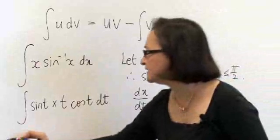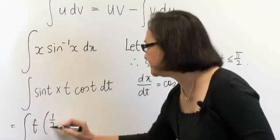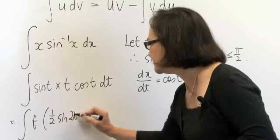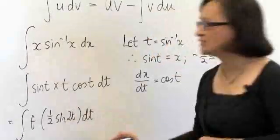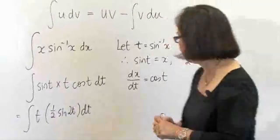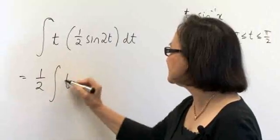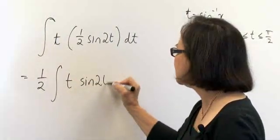Then this becomes t half sine 2t dt, and it's much easier to integrate this product now. And this is now going to equal a half t sine 2t dt.